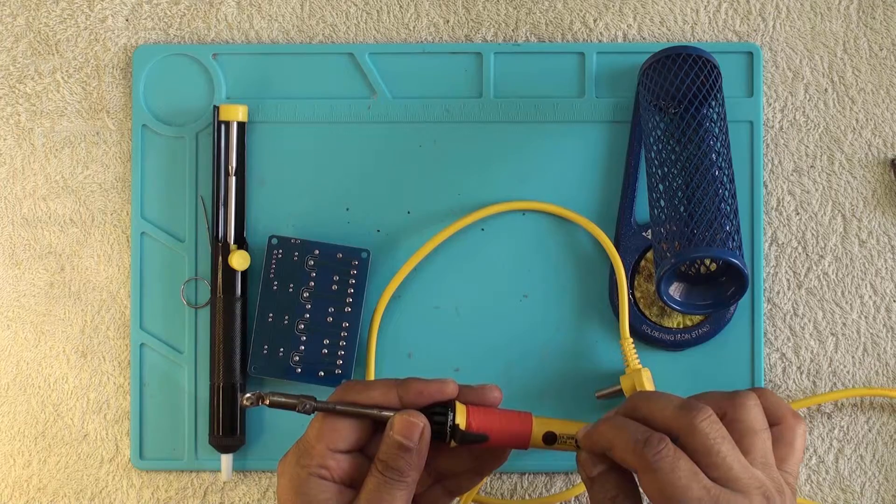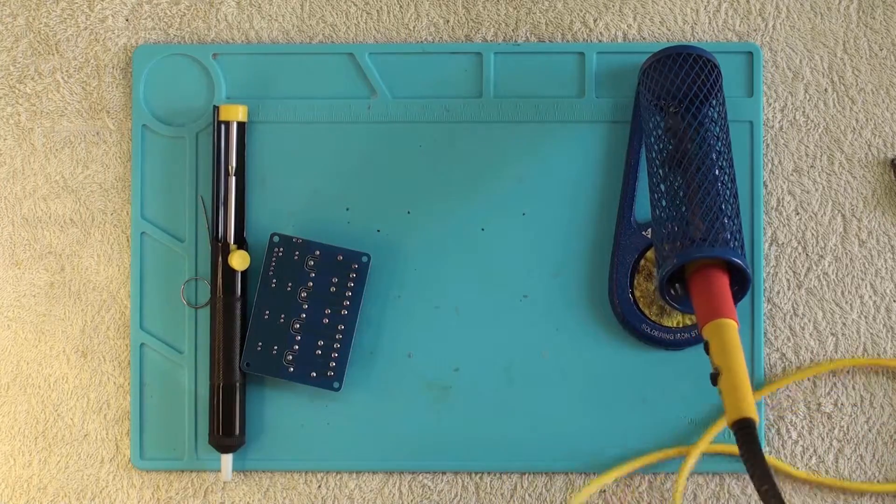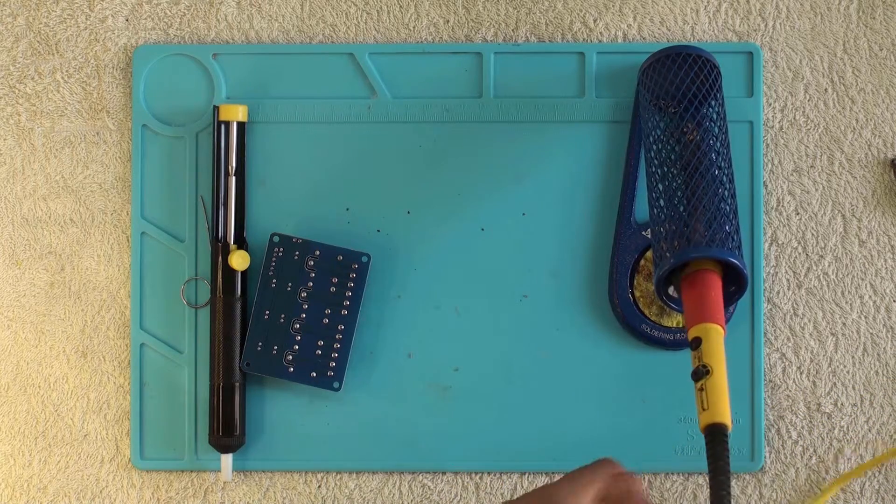Now let's set the voltage of this iron. Let's connect the soldering iron with the power outlet and wait till it gets heated.